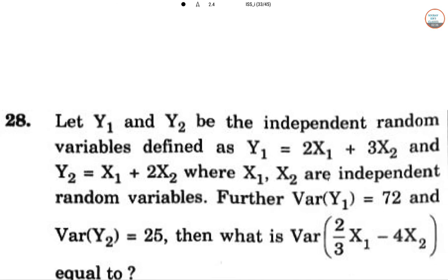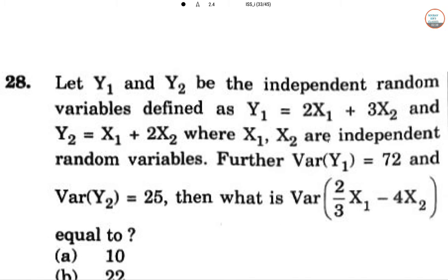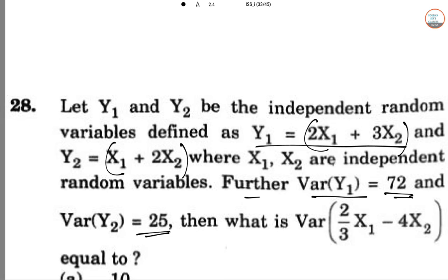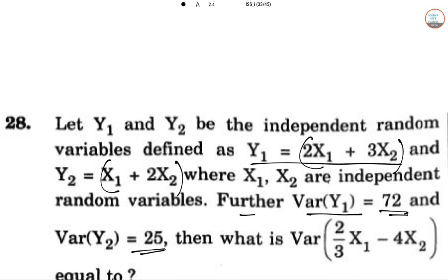Next one, number 28. Let Y_1 and Y_2 be independent random variables defined as Y_1 = 2X_1 + 3X_2 and Y_2 = X_1 + 2X_2, where X_1 and X_2 are independent random variables. Further, Var(Y_1) = 72 and Var(Y_2) = 25. What is the value of Var((2/3)X_1 - 4X_2)?